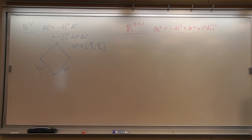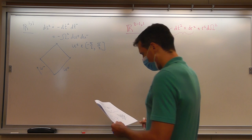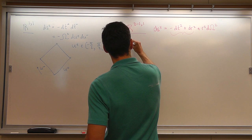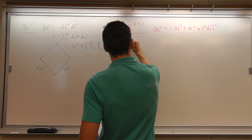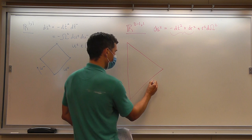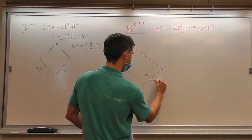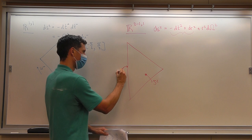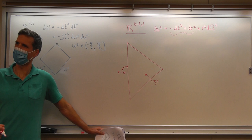This looks just like the two-dimensional case. The only difference is that r starts at 0 now. This is the Penrose diagram of Minkowski space in more than two dimensions. Each point on this diagram is an S2, and this line at the left is r equals 0.